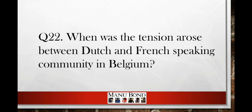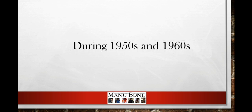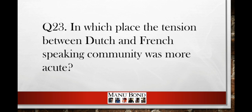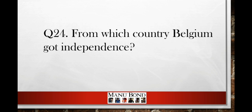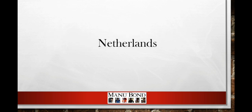Question number twenty-two: when did tension arise between the Dutch and French-speaking community in Belgium? Answer: in the 1960s. Question number twenty-three: in which place was the tension between the Dutch and French-speaking community most acute? Answer: Brussels. Question number twenty-four: from which country did Belgium get independence? Answer: Netherlands.